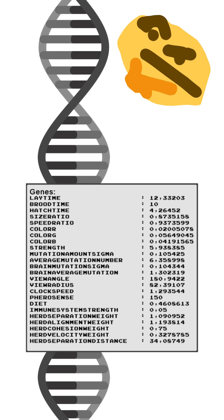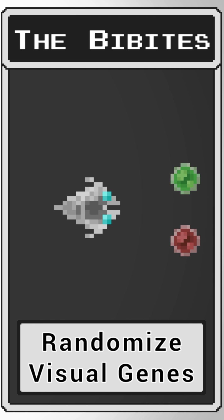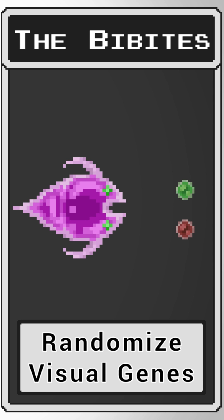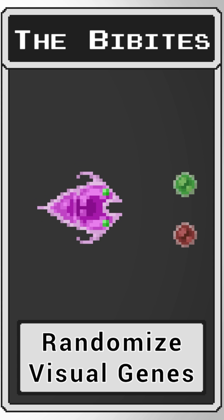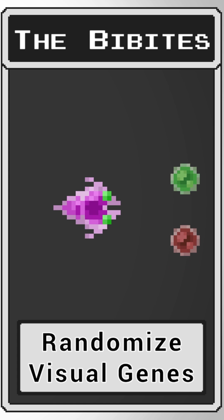What I decided to do is rework the pivots simulation so that the genes of an individual influence their appearance. As an example, depending on the size of the species, they will be more or less pixelated.